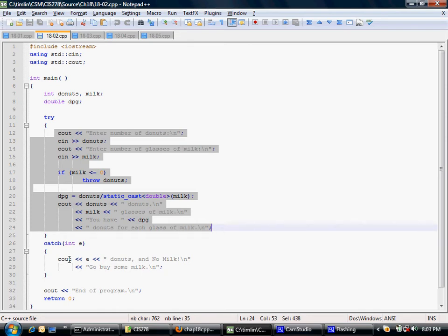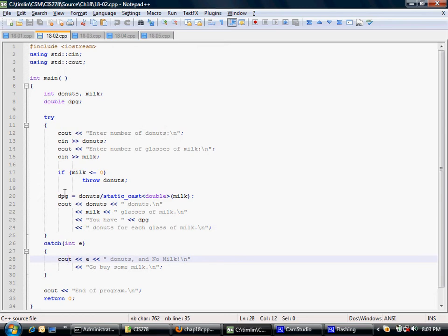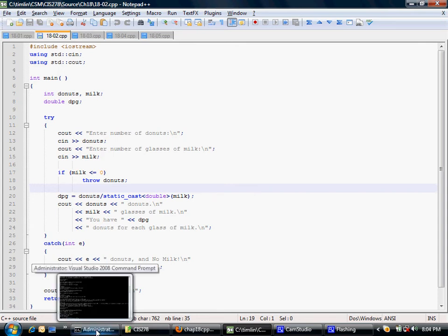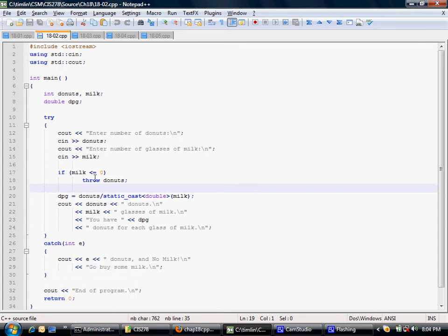Some programming languages don't support try-catch blocks at all. But C++ and Java both do. I actually am a fan of them. I think they work really well. They're a good way of locally handling programs. So we could try this one. We're actually going to throw our own exception called donuts. An exception handler in C++ is a little different than Java. In Java, an exception handler has to be a Java class. That's not the case in C++. An exception handler could be almost anything, actually.